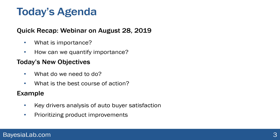How can we operationalize these measures of importance? More specifically, what can we decide in terms of what is the best course of action? The context here is we're going to use a key drivers analysis of auto buyer satisfaction and try to use insights from the survey plus the model to really prioritize what product improvements we should pursue. A very traditional, prototypical example of using Bayesian networks.